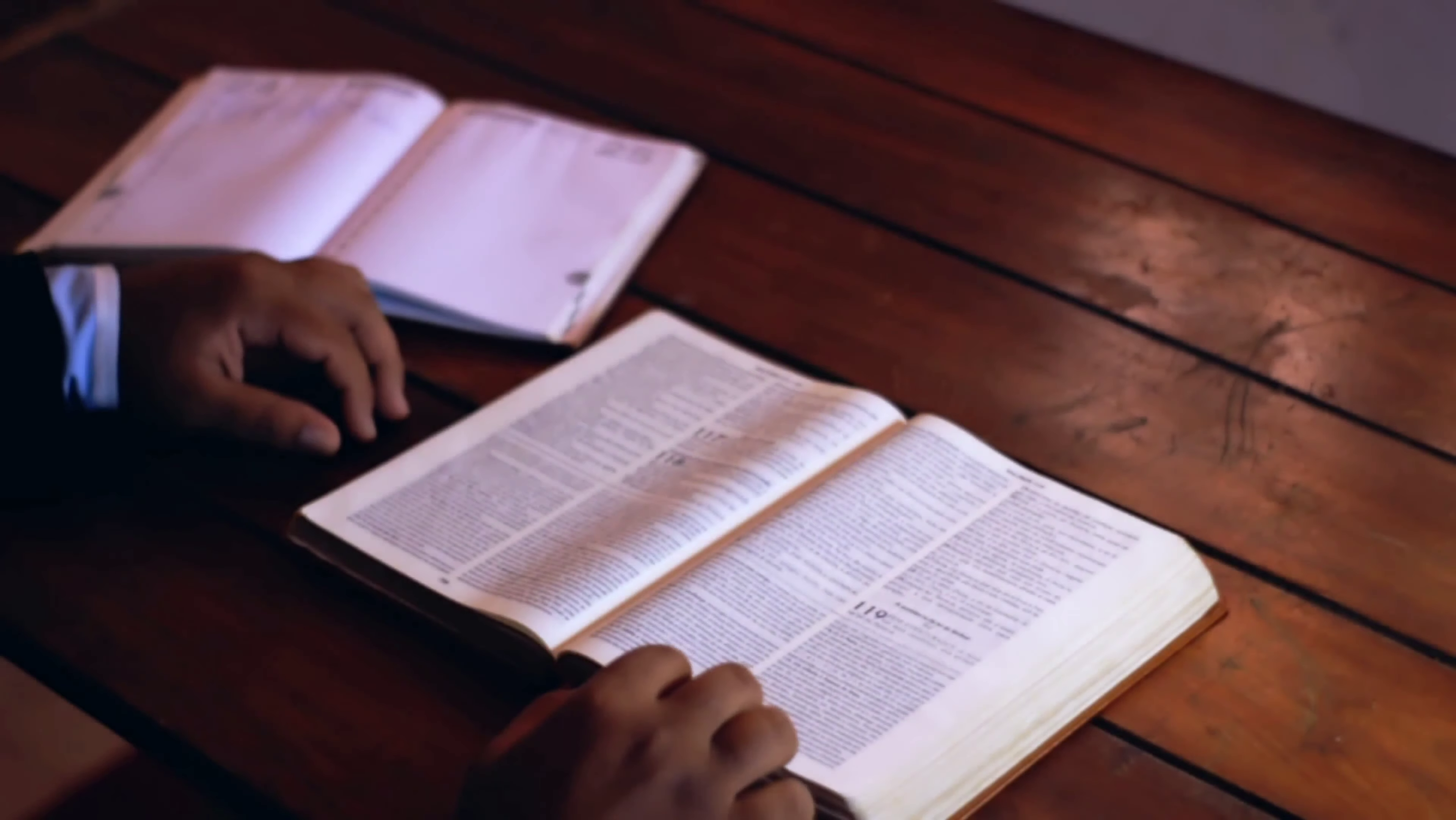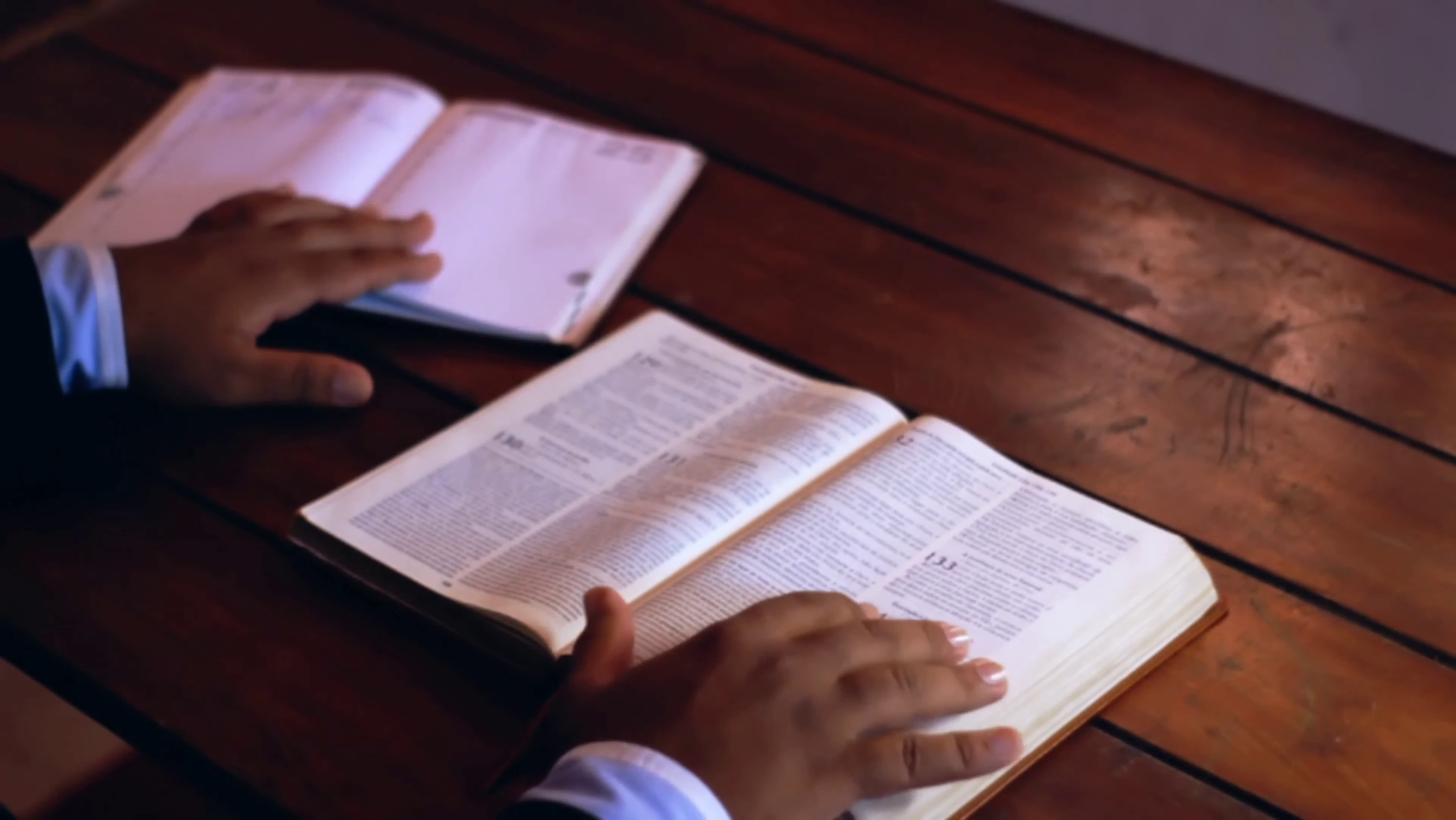A foolish son is the ruin of his father, and the contentions of a wife are a continual dripping. Houses and riches are an inheritance from the fathers, but a prudent wife is from the Lord.